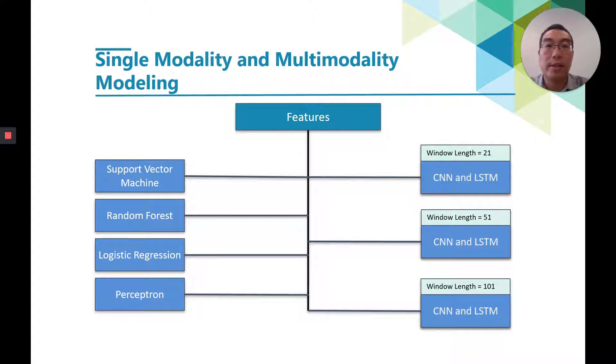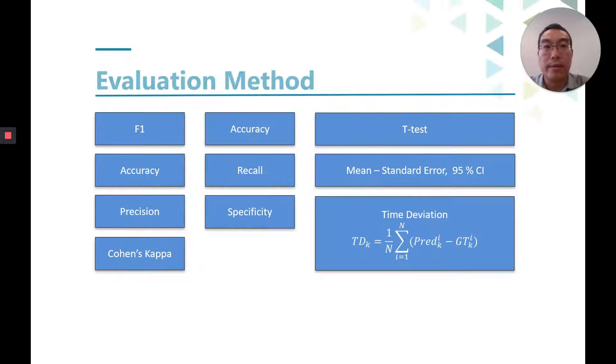In our work, we systematically evaluated the traditional machine learning models and several baseline deep learning models. For deep learning models, we adopted the sequence-to-label structure. For each sleep epoch, we used the centered sliding window with stride equal to 1 to pick up the features and then input them into the CNN and LSTM networks. As a benchmark work, we only used networks with a single layer.